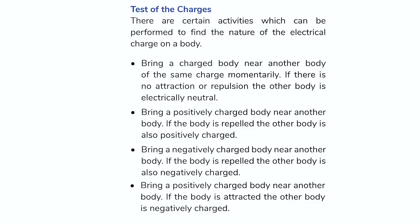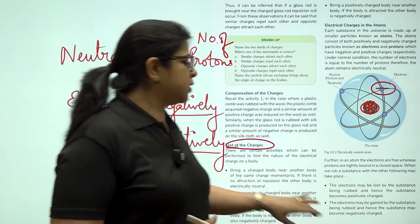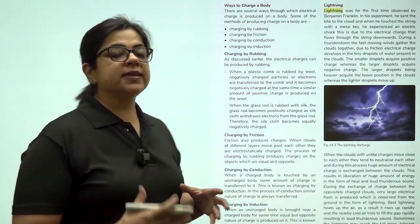Now let us understand how we can test these charges. There are certain activities which can be performed to find the nature of the electrical charge on a body. Bring a charged body near another body of the same charge. If there is no attraction or repulsion, the other body is electrically neutral. Bring a positively charged body near another body - if the body is repelled, the other body is positively charged. Bring a negatively charged body near another body - if the body is repelled, the other body is also negatively charged. Bring a positively charged body near another body - if the body is attracted, the other body is negatively charged.